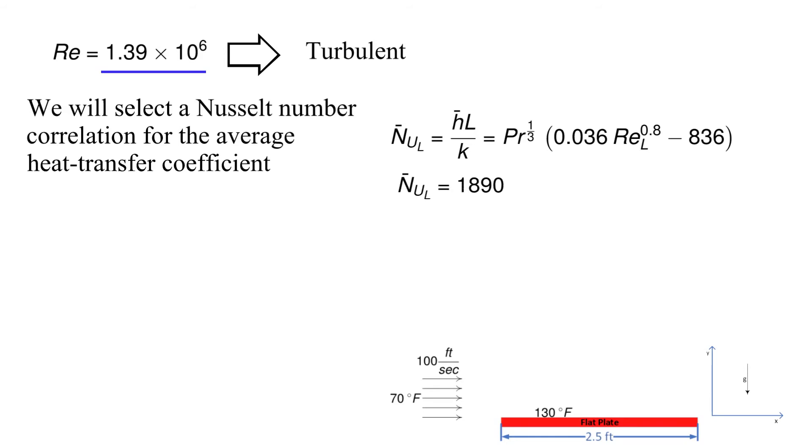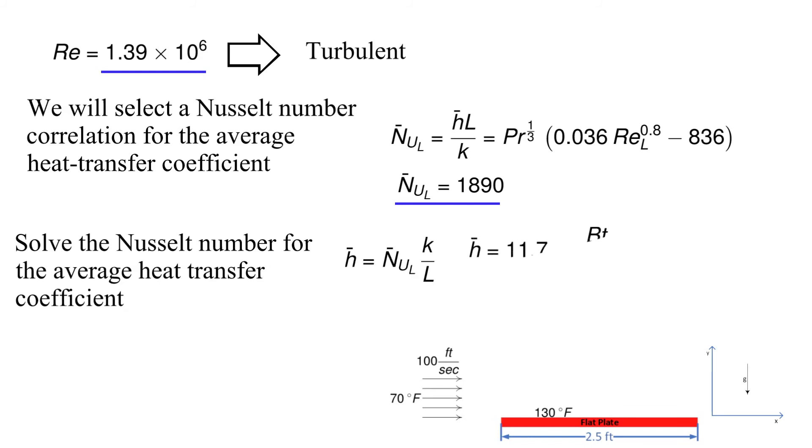We will use the one indicated which is for an average Nusselt number over the length of the plate. Once we have calculated the average Nusselt number we can solve for the average convective heat transfer coefficient. These calculations are provided here.